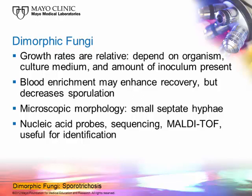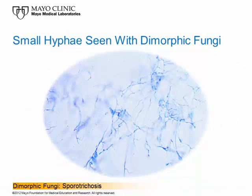They all have very small, delicate hyphae. Dimorphic fungi all have this particular feature, but not all fungi with small, delicate hyphae are dimorphic fungi. We do have nucleic acid probes, nucleic acid sequencing, and now MALDI-TOF to help identify these organisms in addition to traditional methods, which most of us still use — the microscopic morphologic features. These small hyphae seen with the dimorphic fungi are septate, and they're just very tiny hyphae, probably 0.5 microns in size.